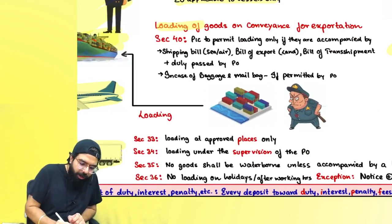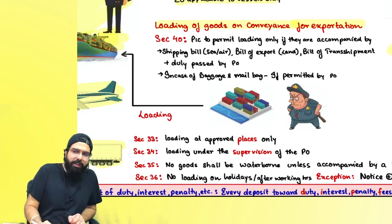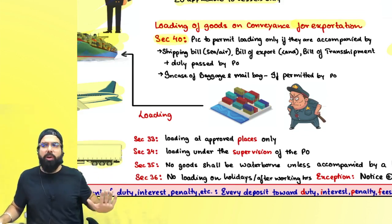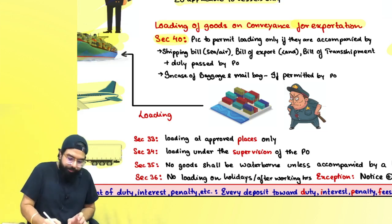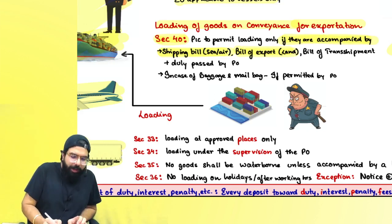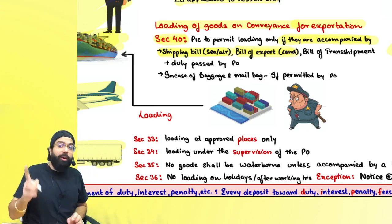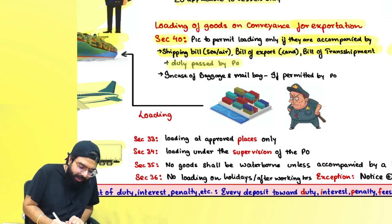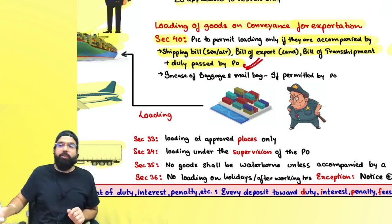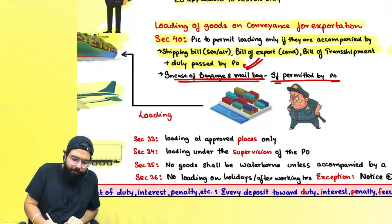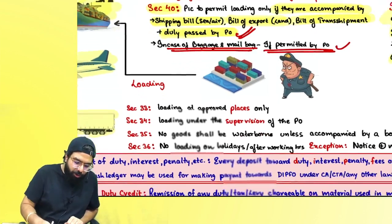Loading will start. Section 40 says the person in charge will not allow loading unless it is accompanied by a shipping bill (in case of sea or air export), a bill of export (in case of export by land), and also a bill of transshipment in case of transshipment — all duly passed by the proper officer, meaning the proper officer should have given the let export order. In case of baggage and mail, permission from the proper officer is sufficient.